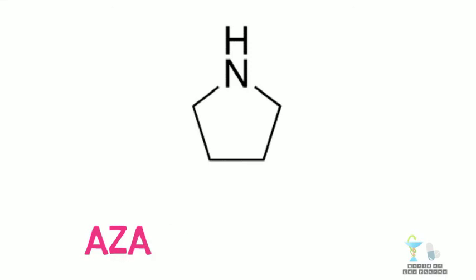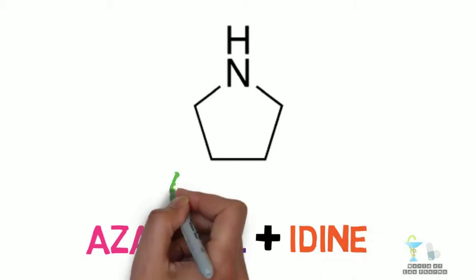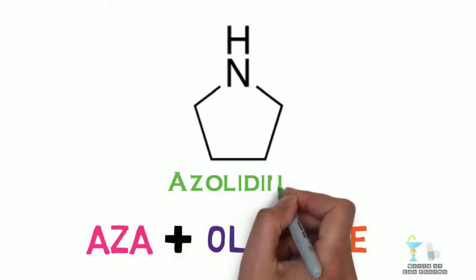AZA for nitrogen atom, OL for five-membered ring, and IDINE for saturation. So AZOLIDINE.